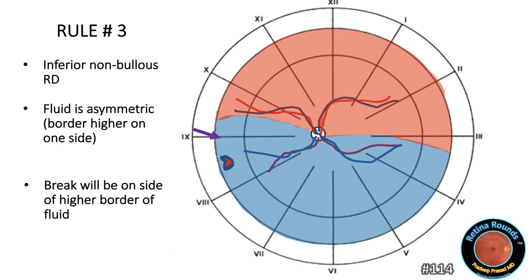Rule number three: here we have an inferior non-bolus retinal detachment with an asymmetric fluid border. Based on this rule, we would expect the break to be on the side where the fluid border is higher. So in this patient's left eye, with the fluid border being higher nasally than temporally, we would expect the break to be located in the infranasal quadrant.